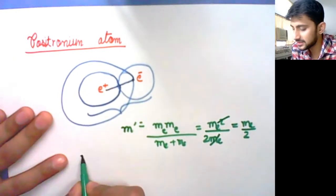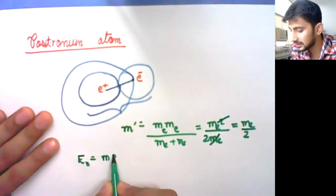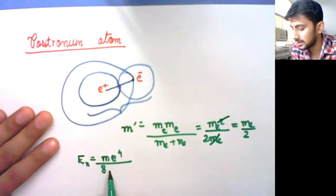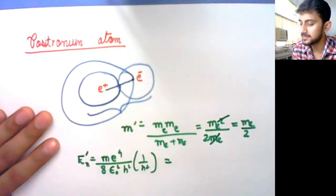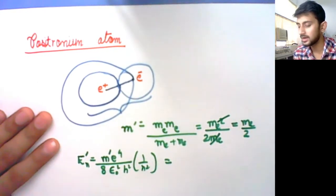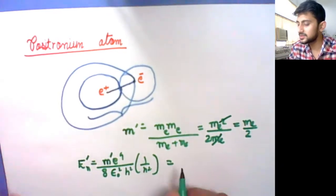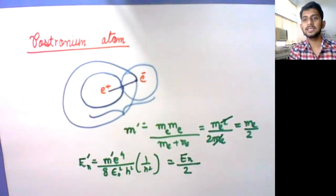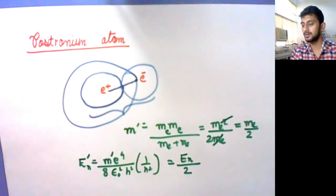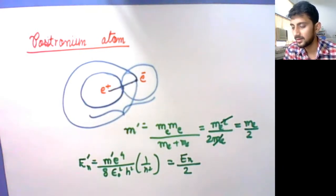When we compute the energy — which was earlier Eₙ = m_e·e⁴ / (8ε₀²h²n²) — and replace the mass with the reduced mass m', since m' = m_e/2, the actual energy Eₙ will be half. So you will get a large shift in the hydrogen spectrum if you have a positronium-like atomic configuration.